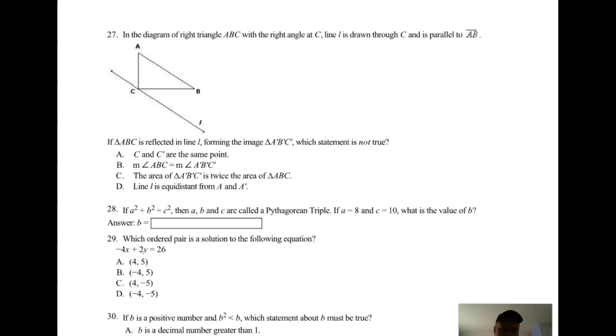27: in the diagram of right triangle ABC with the right angle at C, line l is drawn through C and parallel to AB. If triangle ABC is reflected in line l forming the image triangle A'B'C', which statement is not true? So if I reflect this triangle over this line - remember we reflect, you draw a line to the line of reflection, make a right angle, go the same distance past. So A' would be like right there. And same thing for B: come down, make a right angle, go the same distance past. B' would be like right there. So there's a reflection, it's not perfect but you see it.